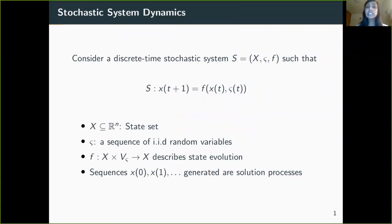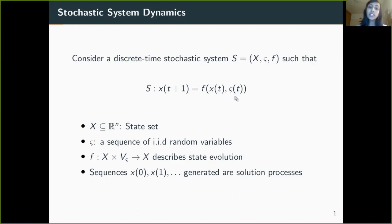Let us begin by looking at a discrete-time stochastic system, which is basically defined over its state set x, a sequence of random variables y_sigma, and a function f, which describes state evolution such that at any point of time we have the current state x(t), the noise acting on the system is y_sigma(t), and the next state at time t+1 is the function f applied to the current state and the noise. Since the noise value is taken at random, from a given initial condition multiple sequences are possible, and these state sequences are known as solution processes.